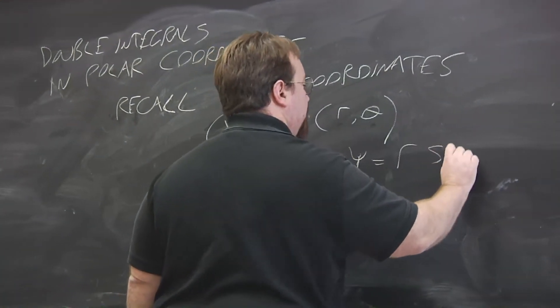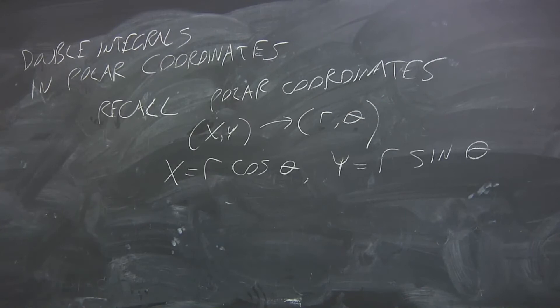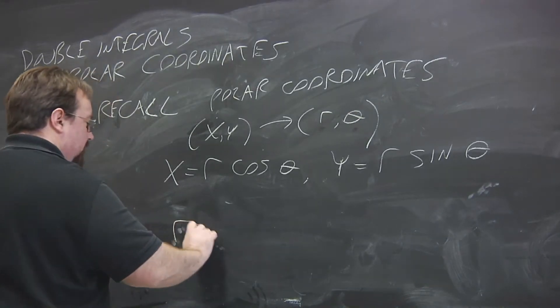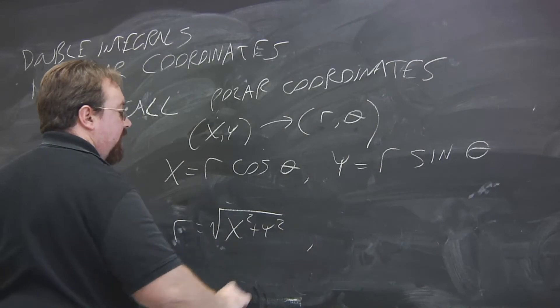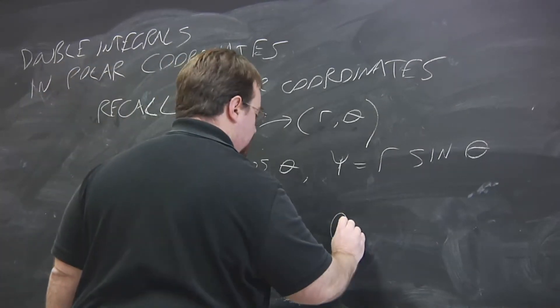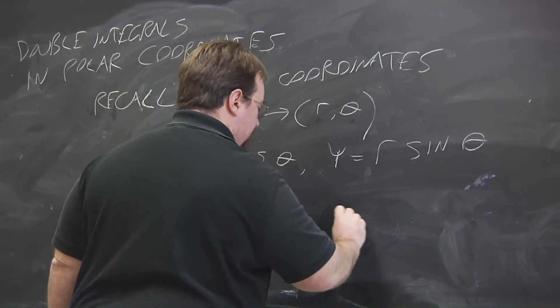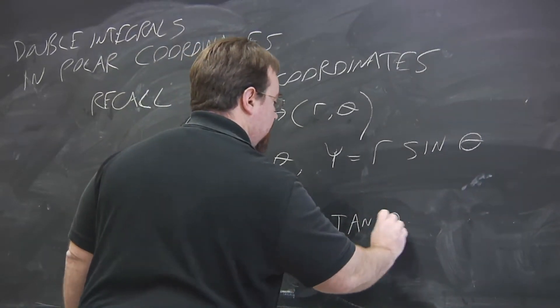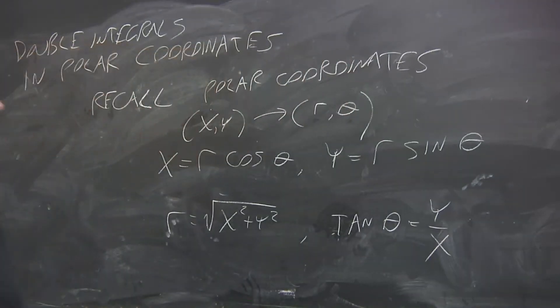So we have the simple conversion from polar to Cartesian, and then to go the other way, here we have a distance from the origin and theta. The relationship with theta is not as simple. We have tan theta equals y over x, and then you need to be careful about how you compute theta if you're given x and y, because you might have to add pi to the result.